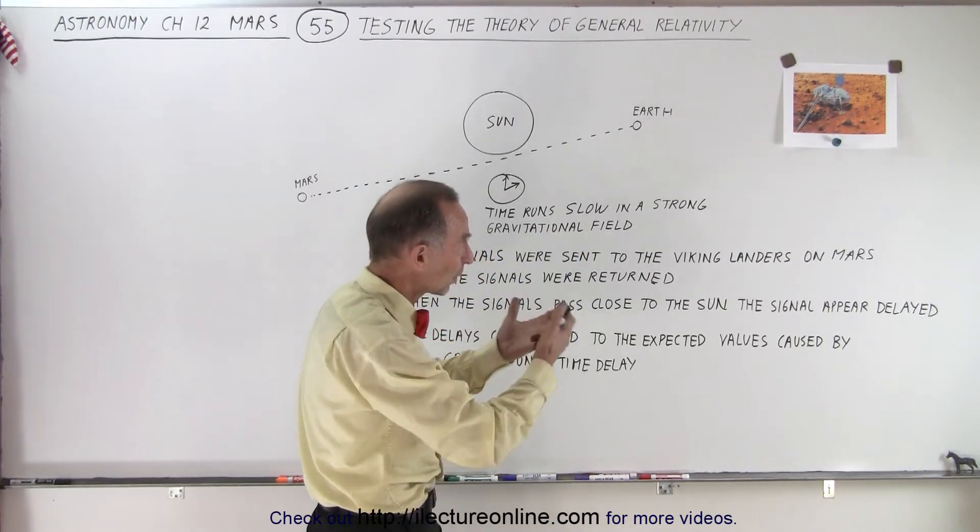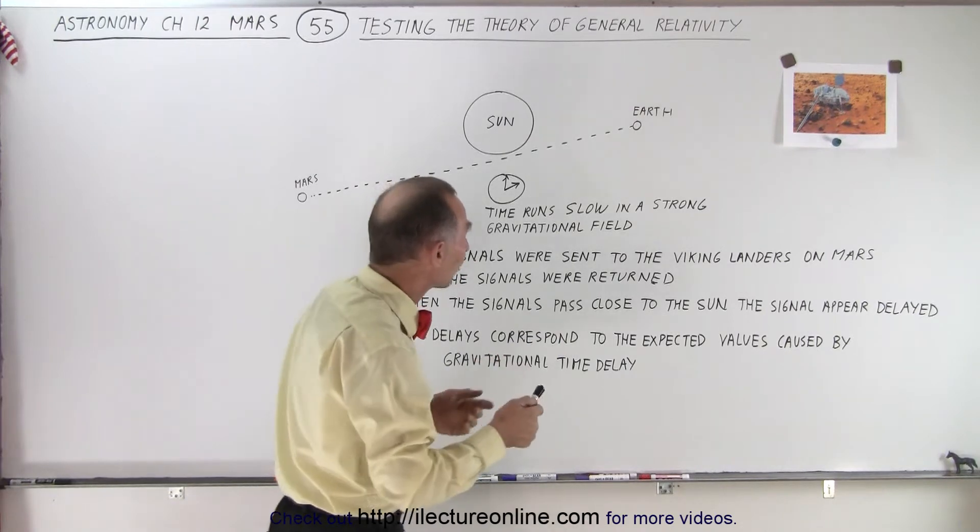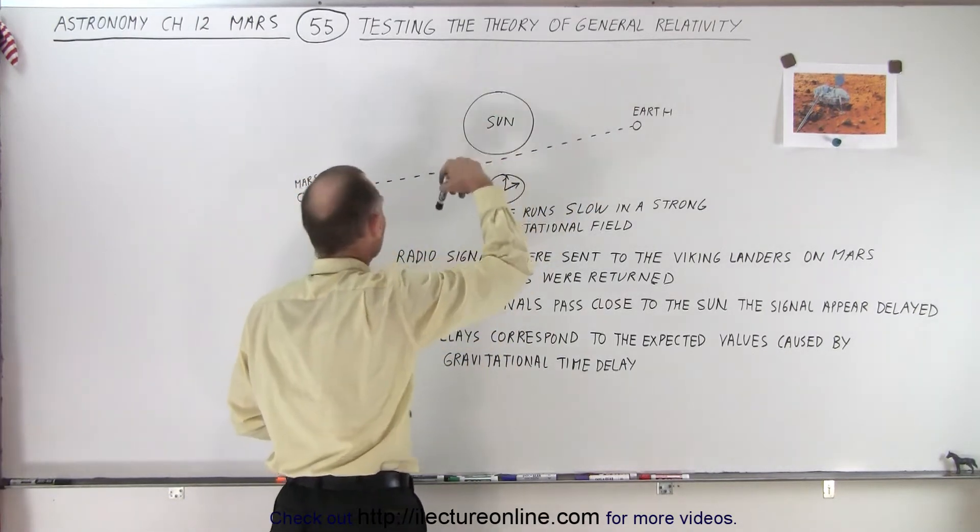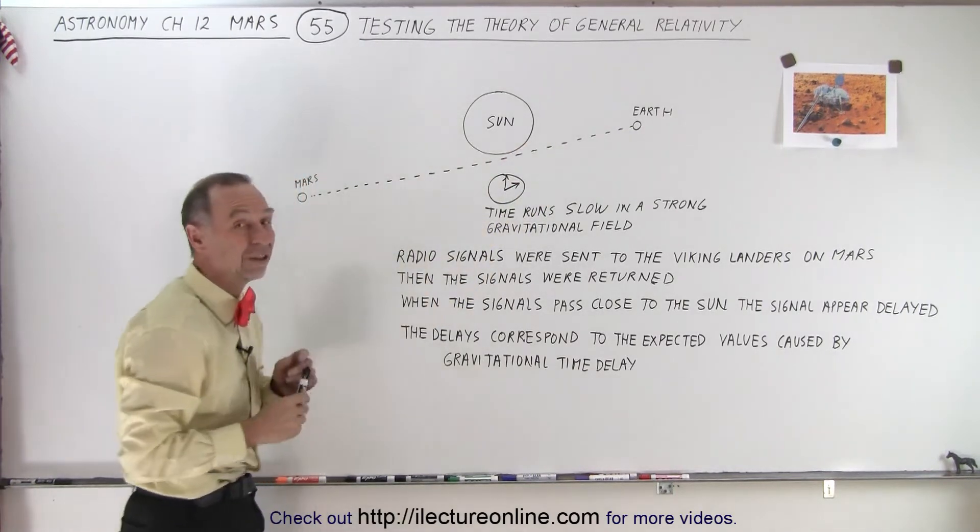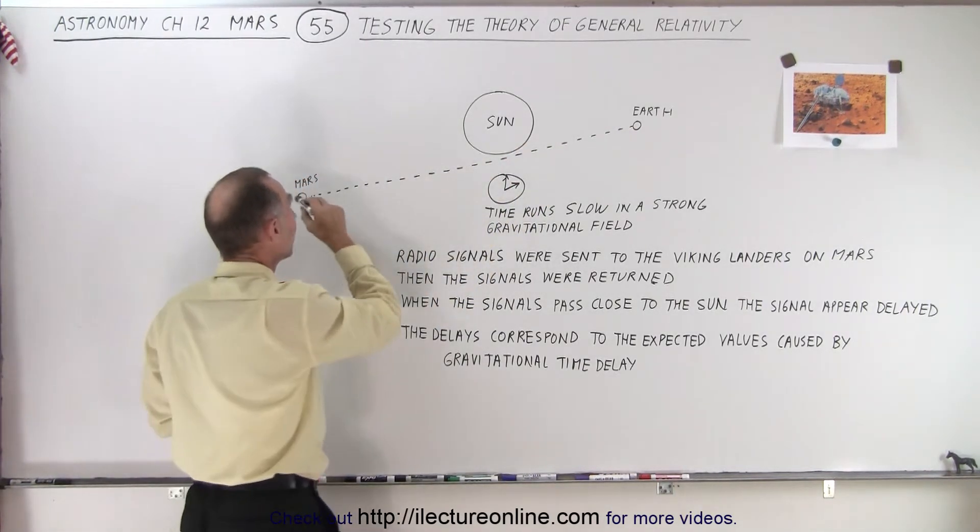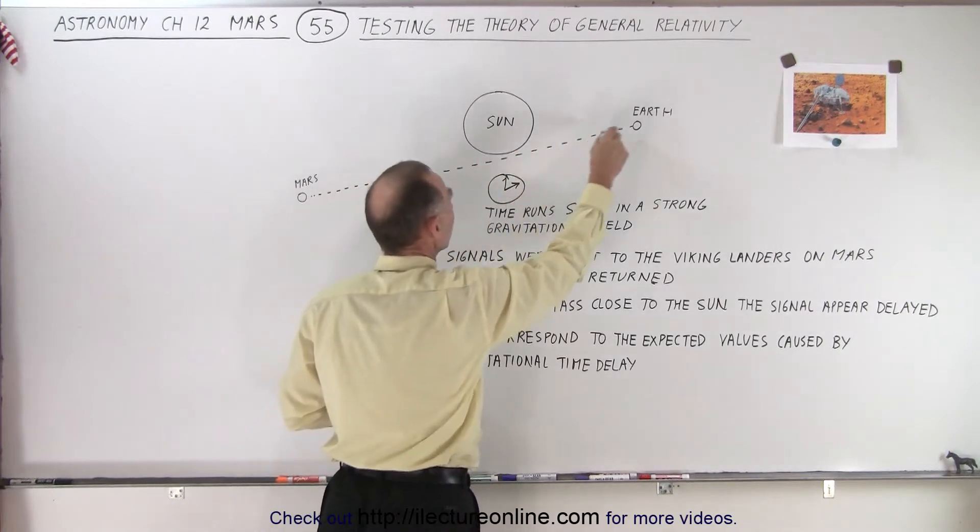As the Earth goes around the Sun and Mars goes around the Sun, sometimes the line of sight to Mars is such that the path takes a very close proximity to the Sun as it passes.